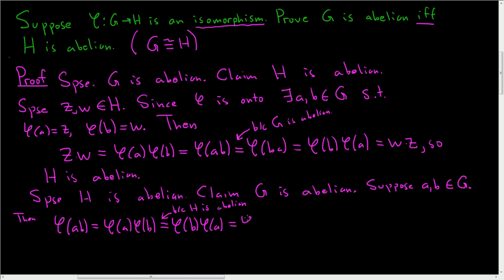And phi is a group homomorphism so this is phi of BA. So we have phi of AB equal to phi of BA. So since phi is one-to-one, right it's an isomorphism so it's certainly one-to-one, we have AB equal to BA, and this shows G is abelian.